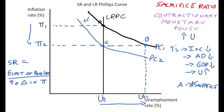A typical estimate of the sacrifice ratio is around three to five. What that means is, for each percentage point that inflation is reduced, three to five percent of annual output must be sacrificed. Generally, unemployment has to increase by three to five percent — that's what most empirical studies show. For Ireland, the figure is even higher, up at five or six percentage points.